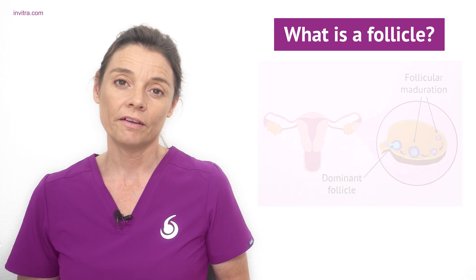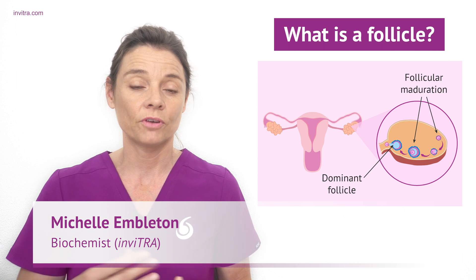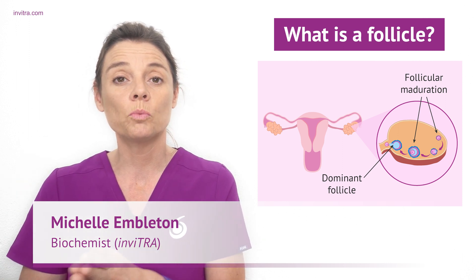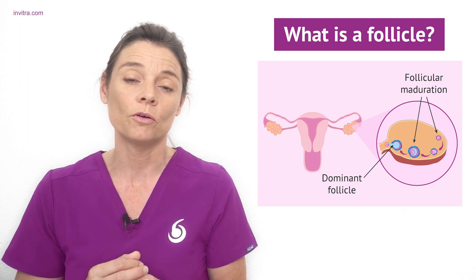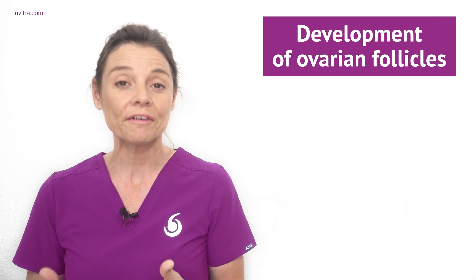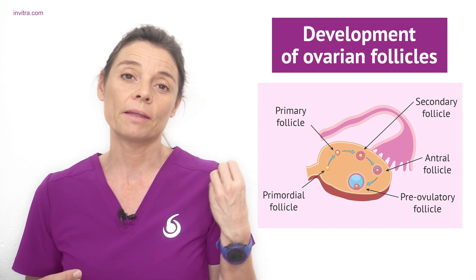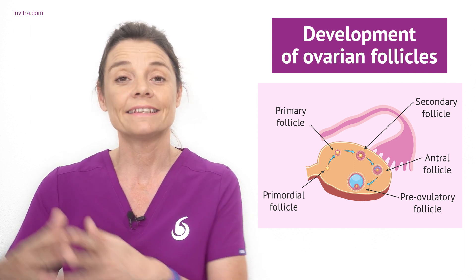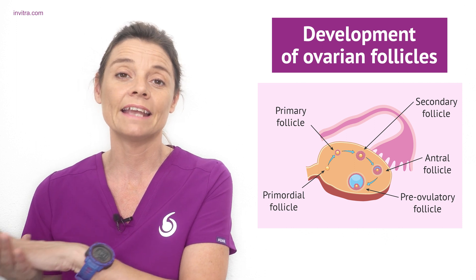Follicles are the ovarian structures where the eggs develop and mature. Each month a set of follicles begin to develop and undergo a process which ends with just one follicle reaching full maturation and releasing an egg in ovulation. The follicle that reaches this maturity is known as the dominant follicle. The ovarian follicles pass through different stages: to start with they are a primordial follicle and begin the development process to become the primary follicle, the secondary follicle, and then the tertiary follicle.